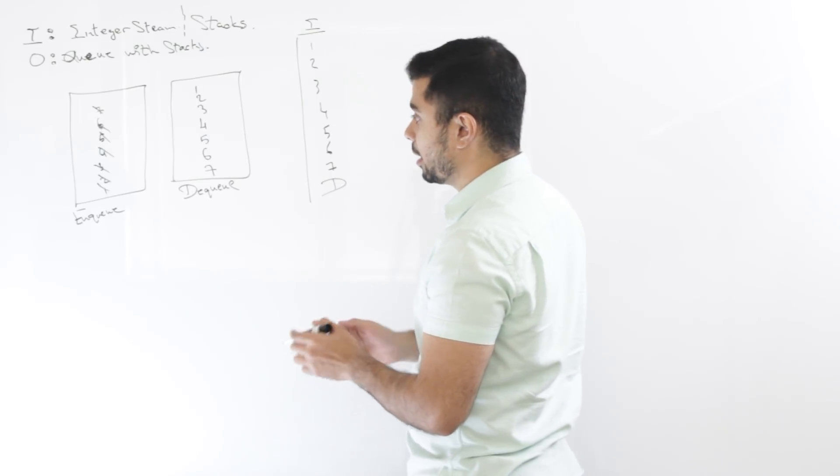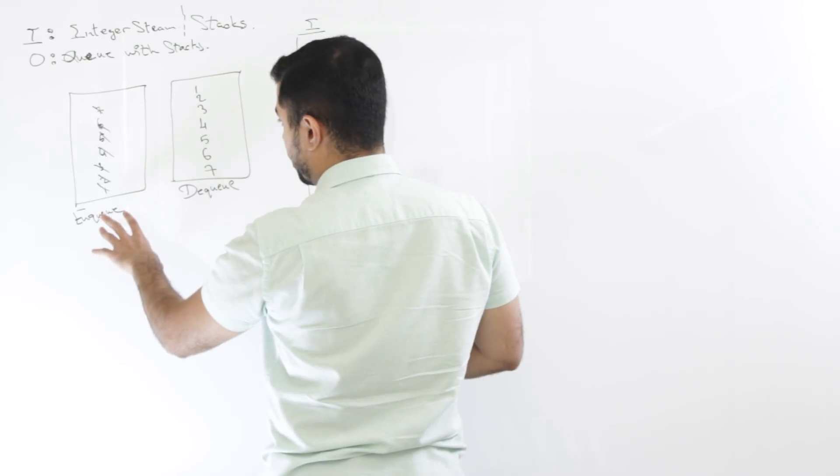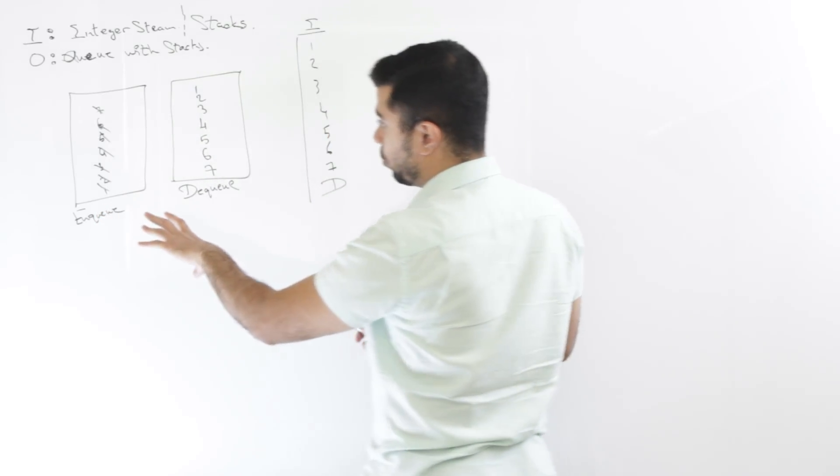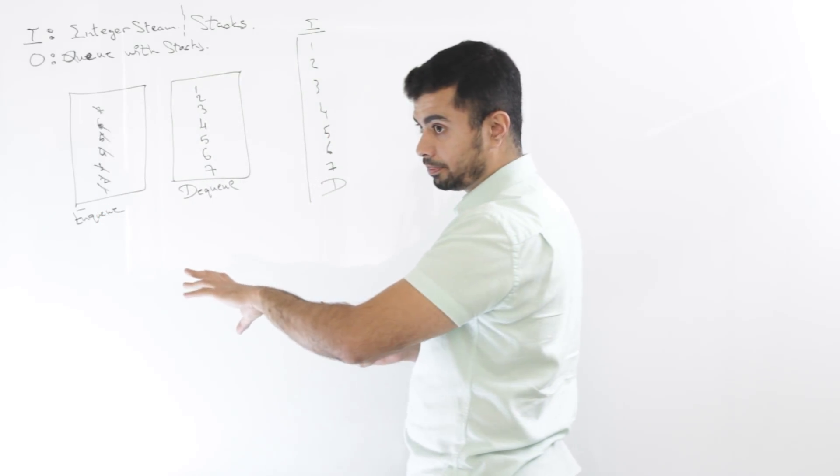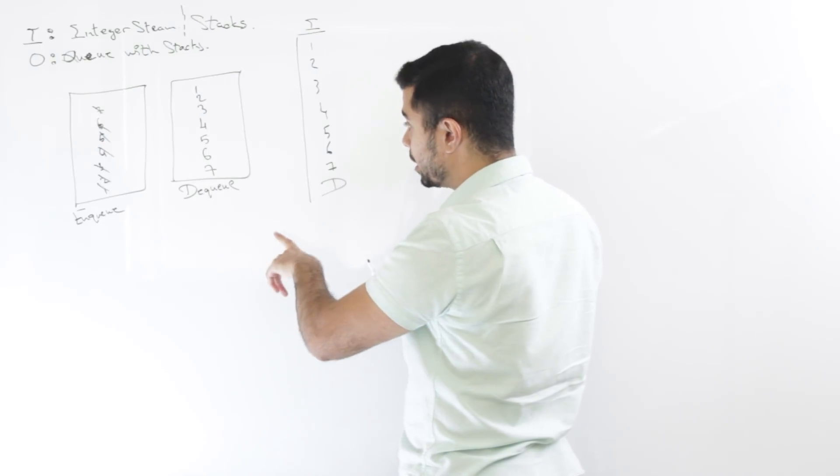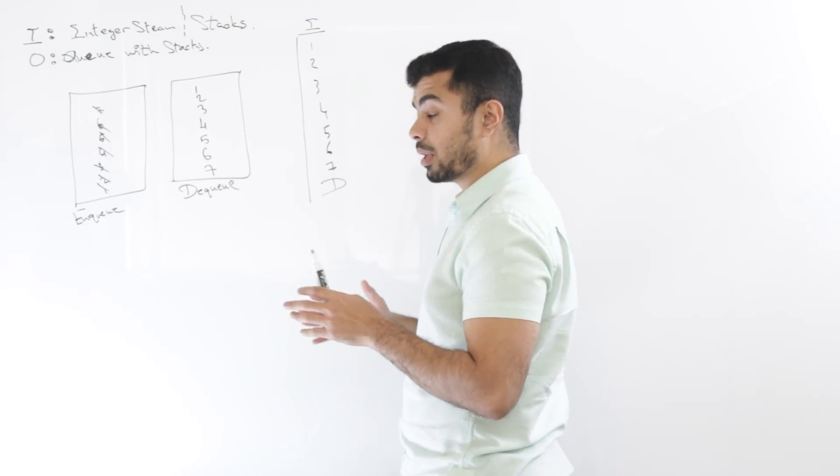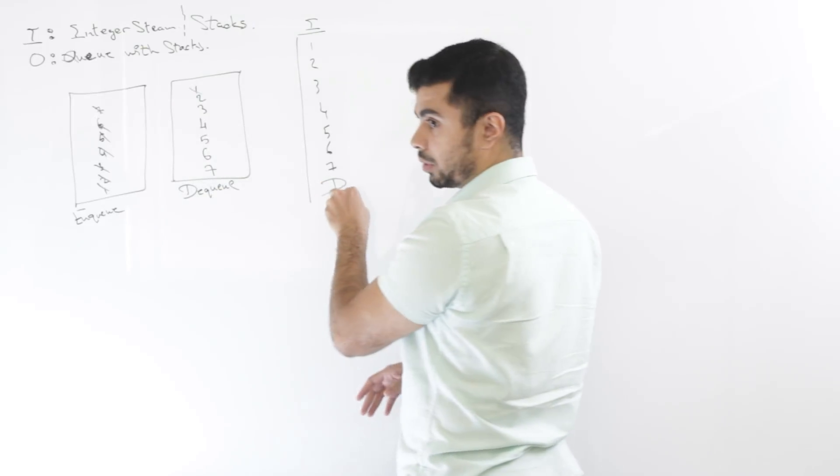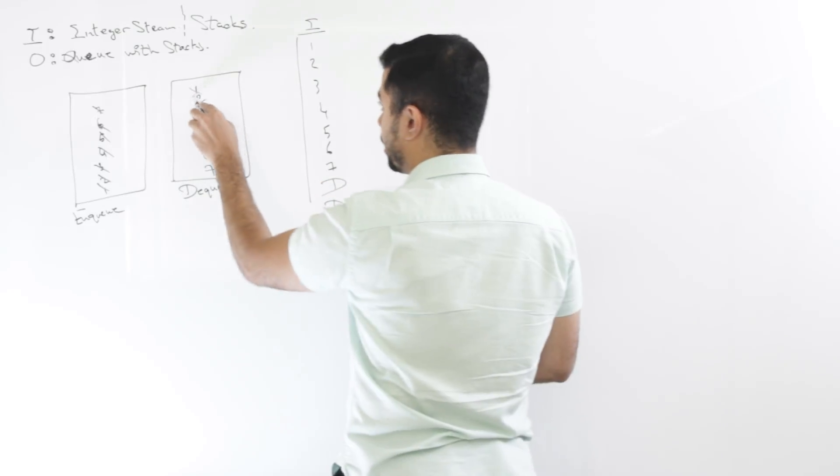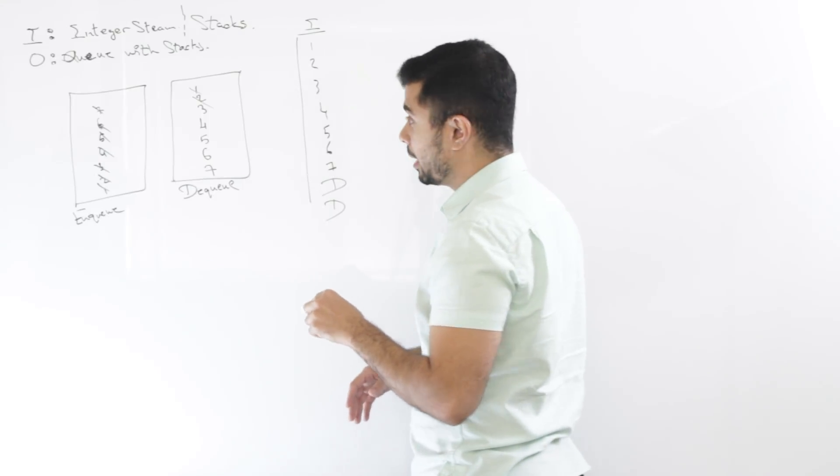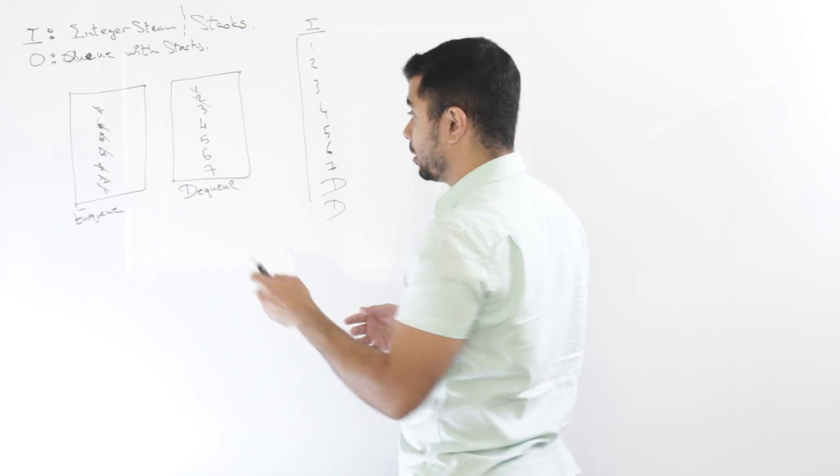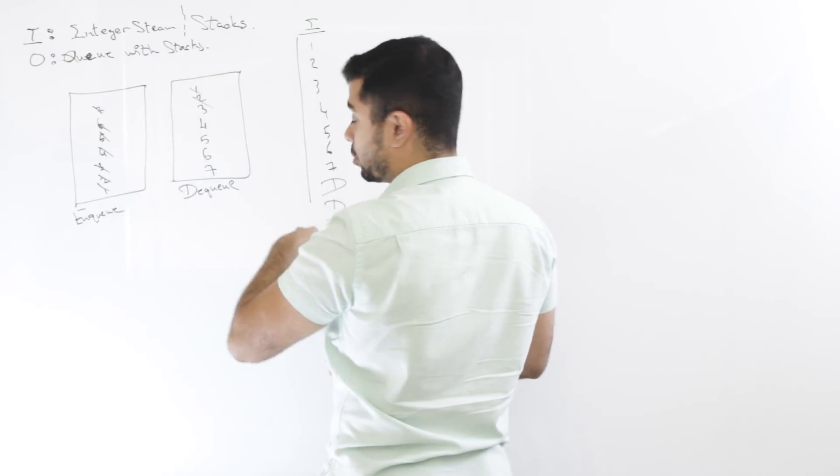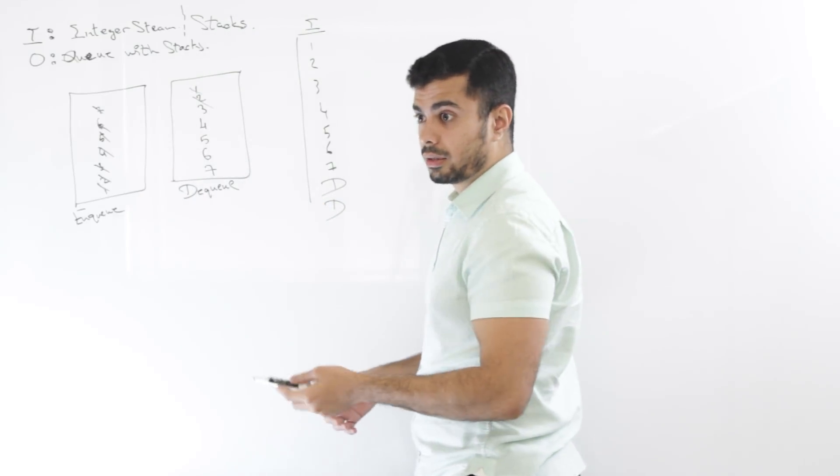So in this case, the enqueue command will be constant time. The dequeue command would be constant time as well in the best case scenario. Because we dequeue one right now with this D command. Let's say I have D again. I'll just be popping things out. But that one time when this stack is empty, this stack is empty and I want to dequeue, then that will be linear time.